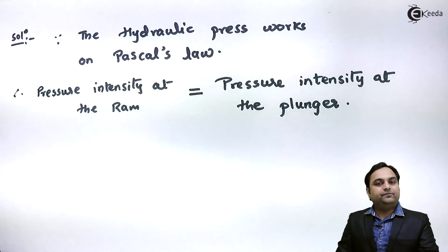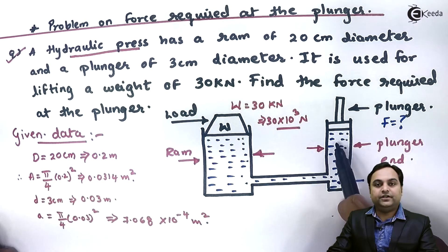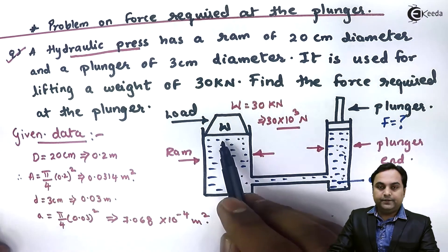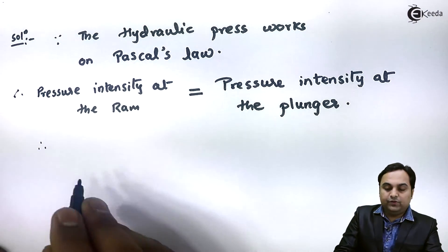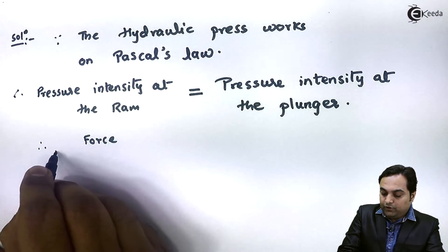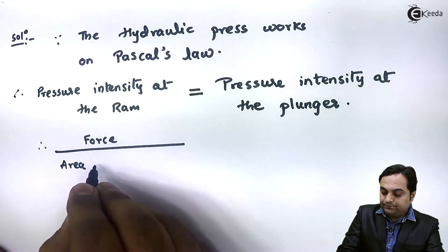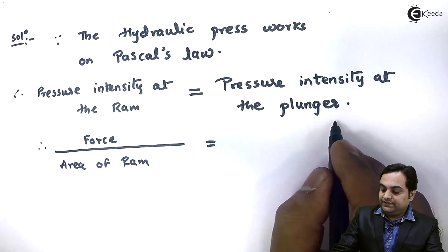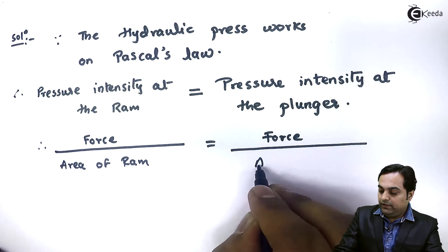This is an important result of Pascal's Law. As shown on the diagram, the pressure applied at the plunger end is transmitted to the RAM end. We know that pressure = force / area, so pressure at the RAM = force on RAM / area of RAM, and pressure at the plunger = force at plunger / area of plunger.